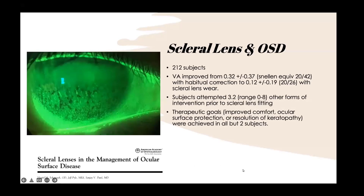Lots of literature over the last 15–20 years supports scleral lenses for these ocular surface diseases. One study by Dr. Shornak involved about 212 subjects and 346 eyes — a retrospective review of medical records along with an analysis survey sent to patients, evaluating long-term success with scleral lenses as therapy. They found great improvement in visual acuity, going from a Snellen equivalent of about 20/40 down to 20/25, which is huge for patients — taking them from borderline legal driving to well above the driver's license threshold.